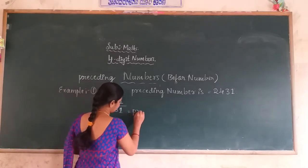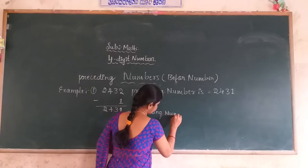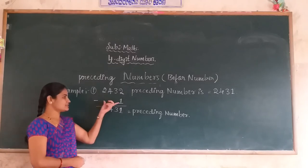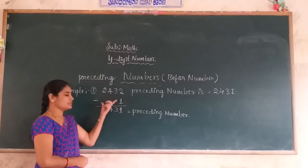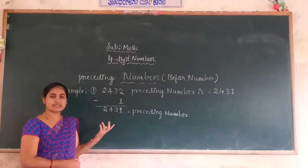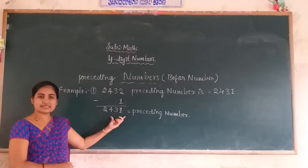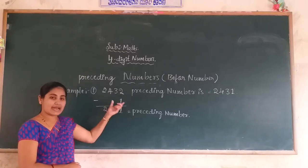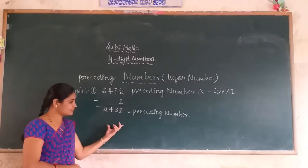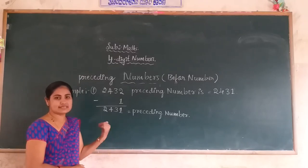This is the preceding number. All students, you must subtract 1 from the given number to easily get the preceding number. For any number given, subtracting 1 gives the preceding number. If you add 1 to the given number, you get the succeeding number.